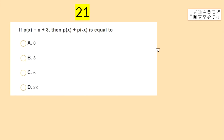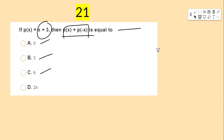If p(x) = x + 3, then p(x) + p(−x) equals — options: 0, 3, 6, 2x.